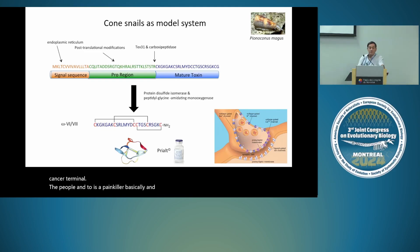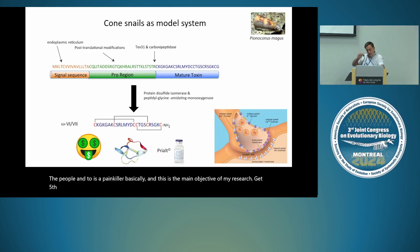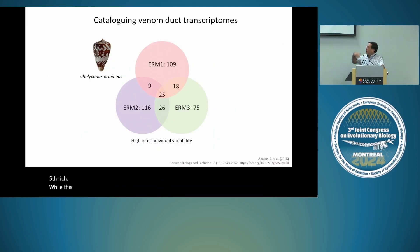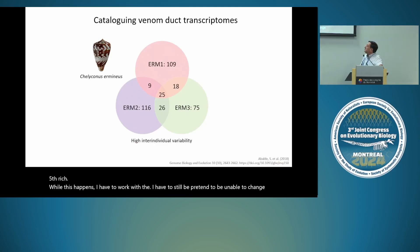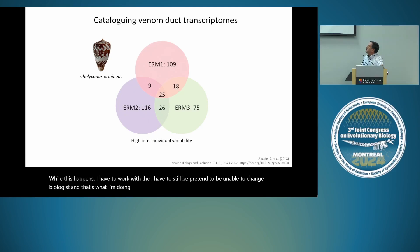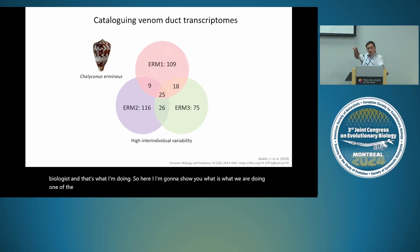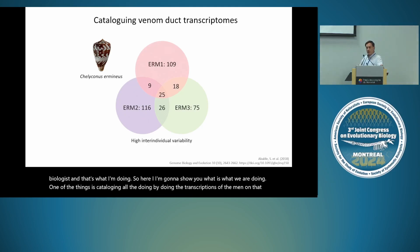This is the main objective of my research — to get rich. But while that happens, I still have to be an evolutionary biologist, and that's what I'm doing. One of the things we are doing is cataloging all the composition of conotoxins in each venom by doing transcriptomics. Each transcriptome of one species has around 200–300 different mRNAs coding for conotoxins.